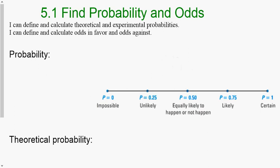Good day everyone. Today we are talking about section 5.1: Find Probability and Odds. We have two learning targets for today: I can define and calculate theoretical and experimental probabilities, and I can define and calculate odds in favor and odds against.